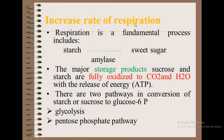Next is increased rate of respiration. Respiration is a fundamental process that includes hydrolysis of starches into sweet sugars with the help of amylase. Major storage products like sucrose and starches are fully oxidized to carbon dioxide and water with the release of energy in the form of ATP. There are two pathways involved in the conversion of starch and sugars to glucose-6-phosphate, the second of which is the pentose phosphate pathway.